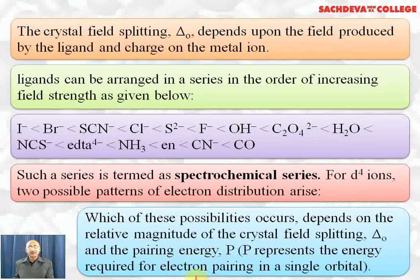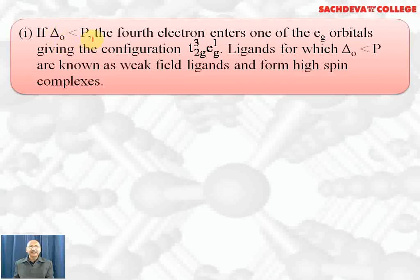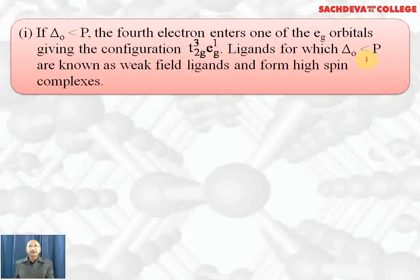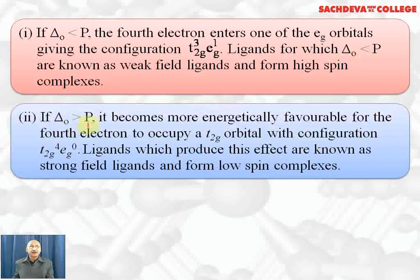P represents the energy required for electron pairing in a single orbital. If Δo is less than P, the fourth electron enters one of the eg orbitals, giving configuration t₂g³ eg¹. If P is less than Δo, pairing starts in the t₂g orbitals, giving configuration t₂g⁴ eg⁰. Ligands for which Δo < P are known as weak field ligands and form high spin complexes because a large number of unpaired electrons are present.